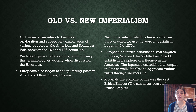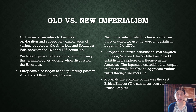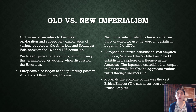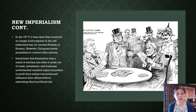New imperialism is largely what we think of when we use the word imperialism, and it began in the 1870s. European countries established vast empires in Africa, Asia, and the Middle East. The U.S. established a sphere of influence in the Americas. The Japanese established an empire in Asia as well. Usually the aggressor nations ruled through indirect rule — puppet governments, things like that. Probably the epitome of this was the vast British empire. You know the term, 'the sun never sets on the British empire.' Well, actually, the sun is kind of setting on the British empire right now.